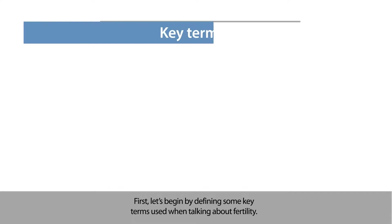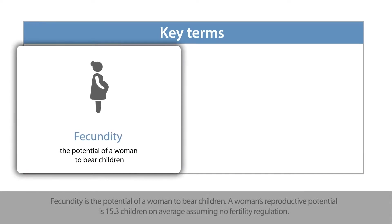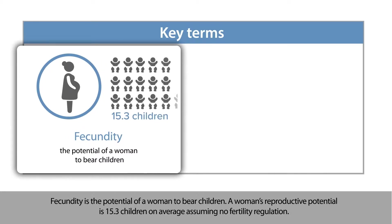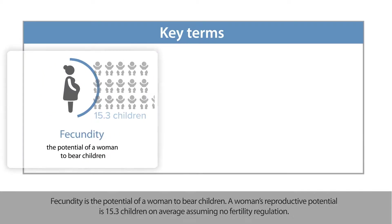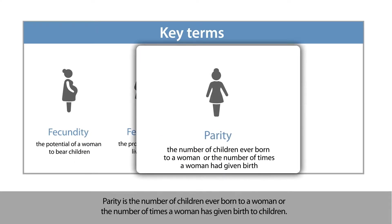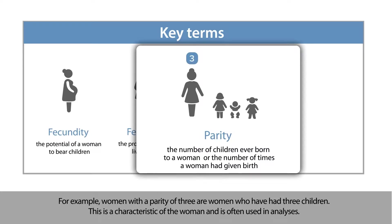First, let's begin by defining some key terms used when talking about fertility. Fecundity is the potential of a woman to bear children. A woman's reproductive potential is 15.3 children on average, assuming no fertility regulation. Fertility is the production of a live birth. Parity is the number of children ever born to a woman, or the number of times a woman has given birth. For example, women with a parity of 3 are women who have had 3 children. This is a characteristic of the woman and is often used in analyses.